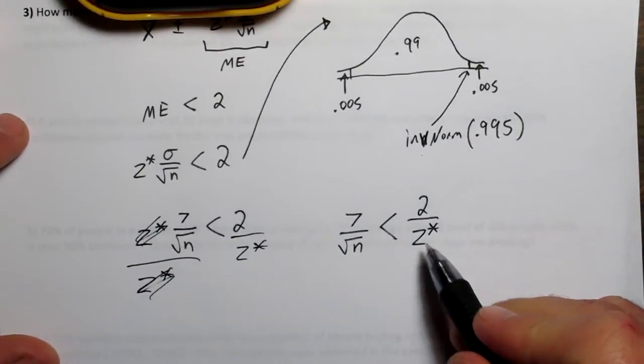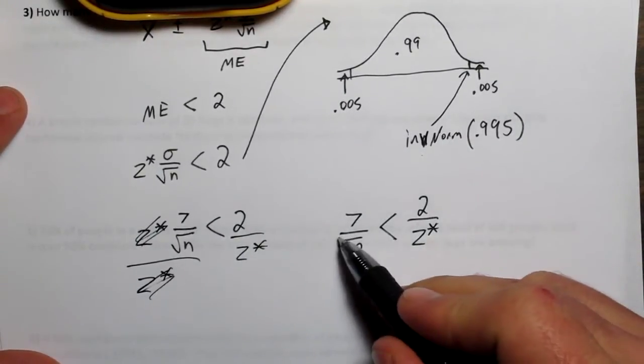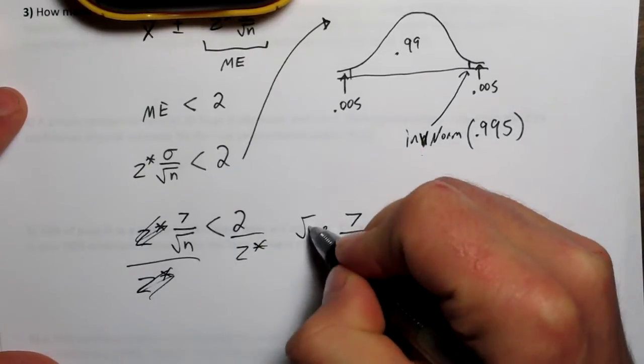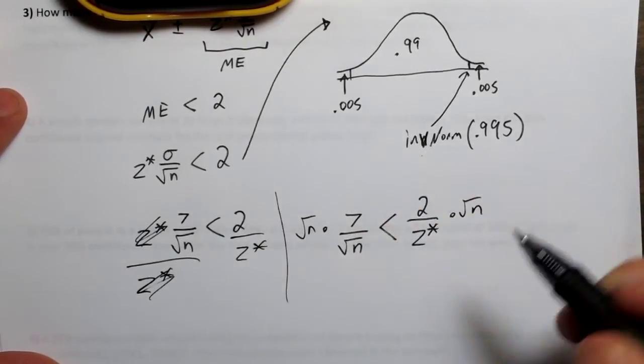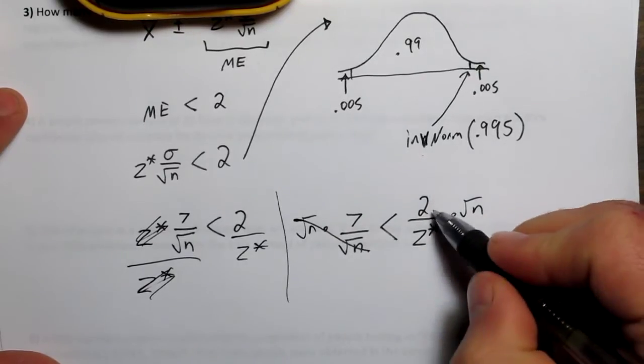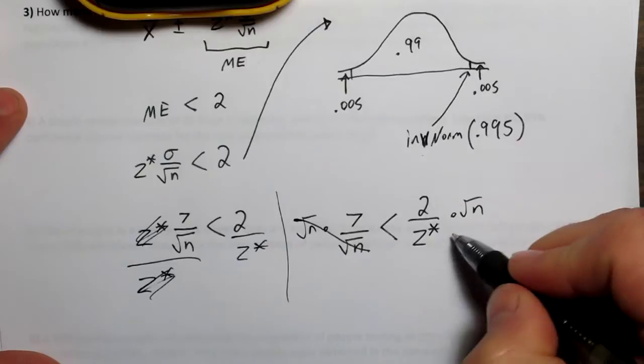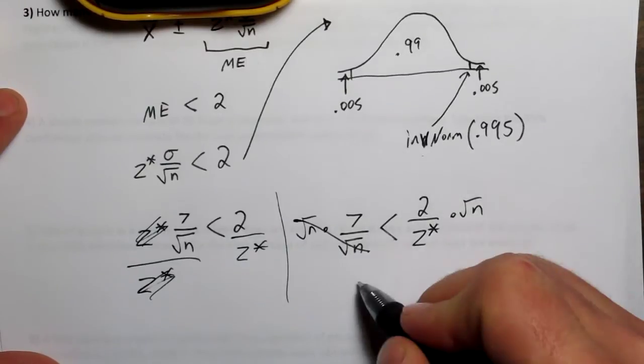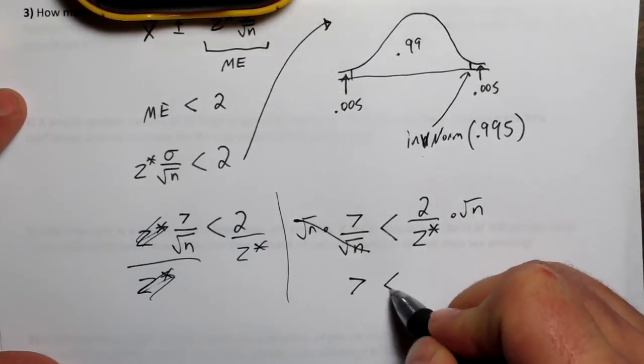Instead of calculating this right now, let's keep going with the algebra. If we multiply both sides by the square root of n, then that cancels and we get 2 divided by z star times the square root of n. And on this other side, we're just left with 7.